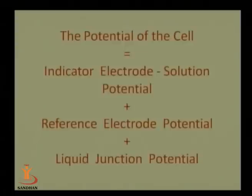According to the potentiometer, the potential of the cell is defined as: indicator electrode potential plus reference electrode potential plus a liquid junction potential. The liquid junction, made of KCl solution, is placed between the indicator and reference electrode to complete the circuit. This is an instrumental method, so we must complete the circuit to measure the potential of the solution.